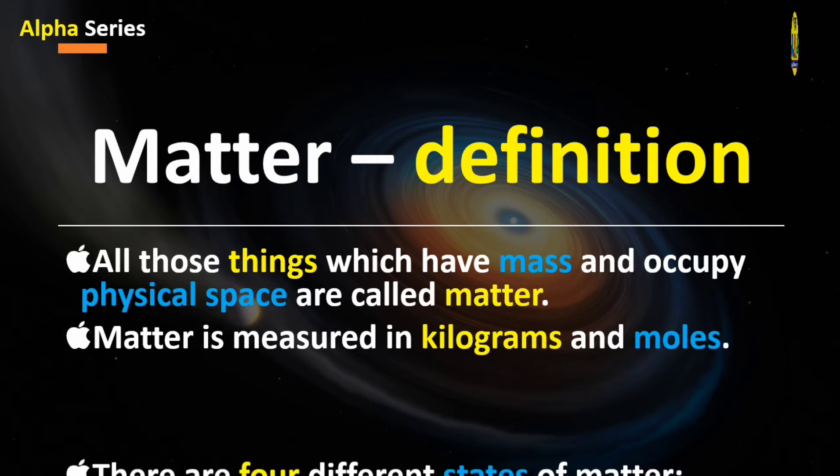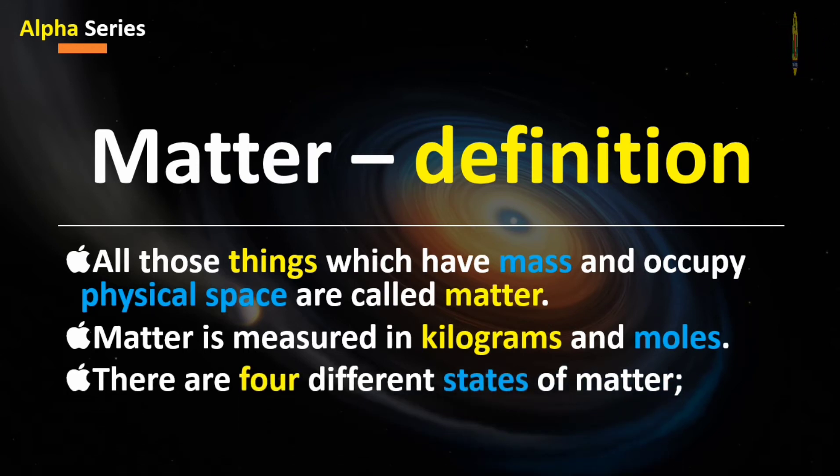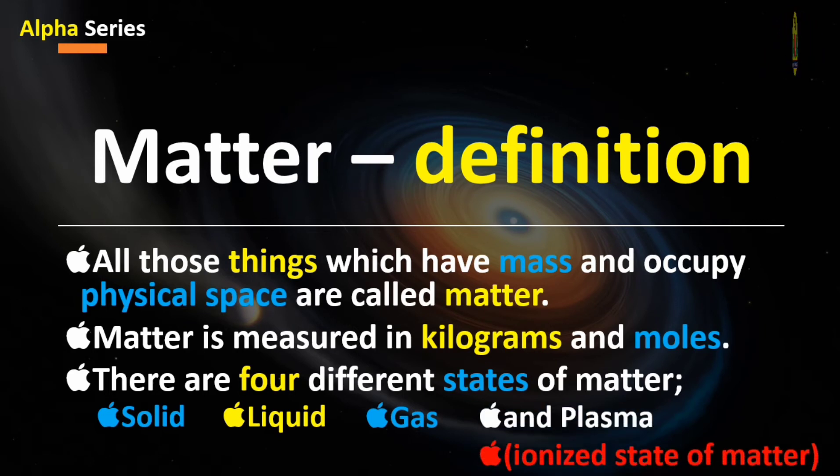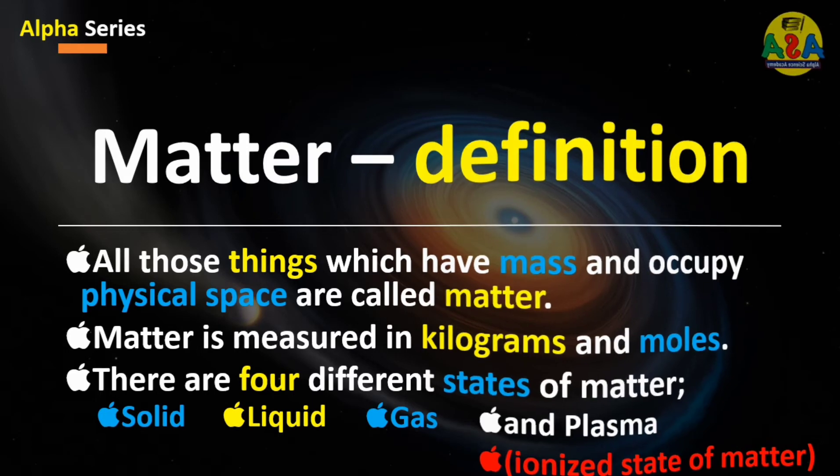There are four different states of matter: number one, solid; second one, liquid; third one, gas; and the fourth and last state is plasma. Plasma is also known as the ionized state of matter. Let's see the definition of energy.